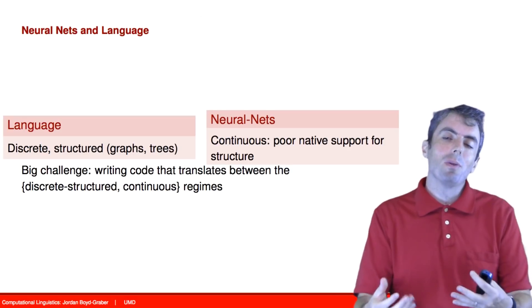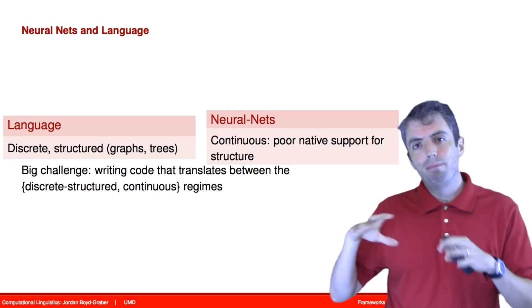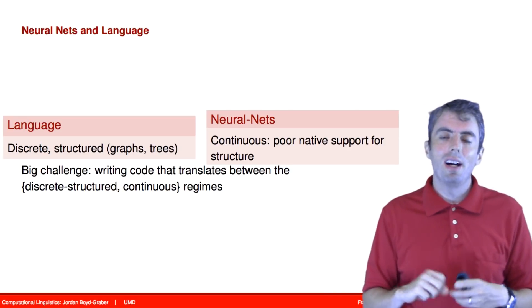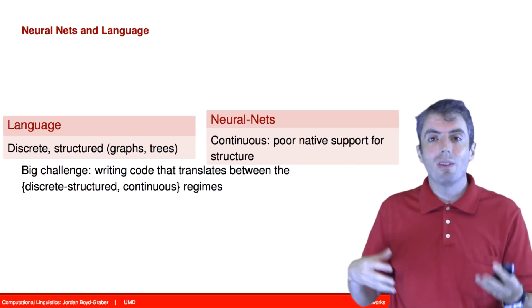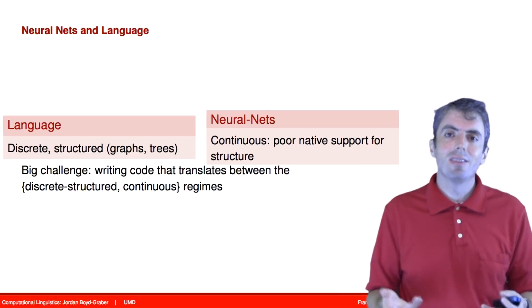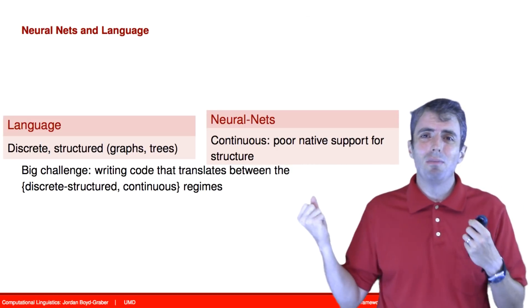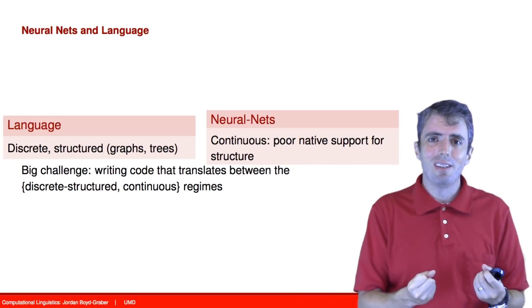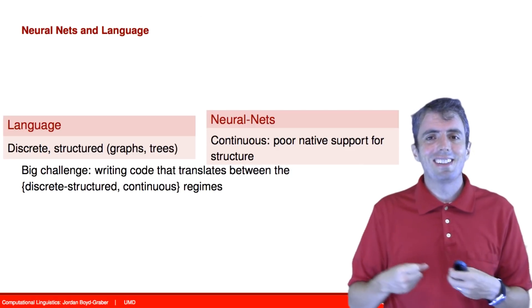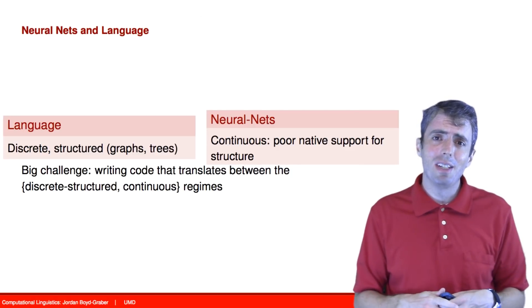And even once you get beyond words, if you have parse trees or other structures, those graphs and trees are themselves discrete objects. And so you need to have some way to move between the discrete world of computational linguistics and the continuous world of deep learning.